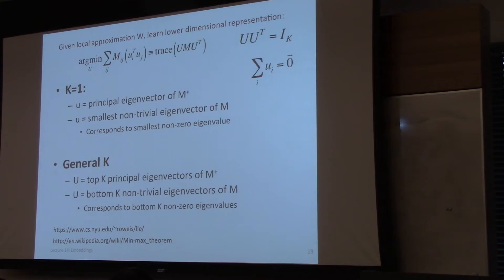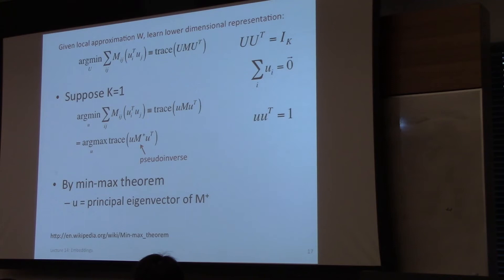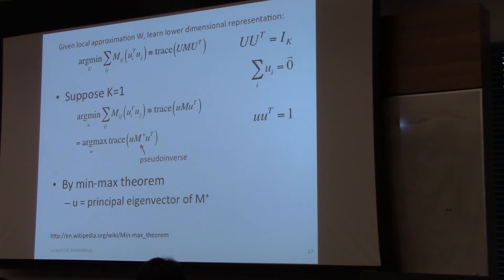Student question: for k=1, shouldn't U be the eigenvector corresponding to the smallest eigenvalue of M, since we're solving a minimization problem? The answer is yes — it must be the smallest non-zero eigenvalue. The reason: W_{ii} is by definition zero from the previous solution, so the only way to get a zero eigenvalue in M would require W_{ij} summing to one in a specific way, which can't happen.